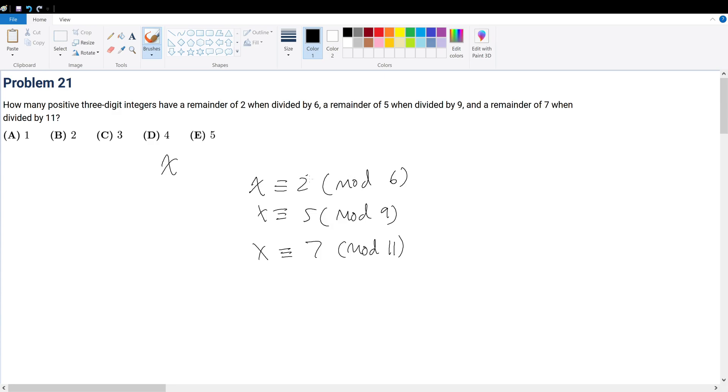Now, what is the difference between the remainder and the divisor? Well, that's 4. So that means x plus 4 must be congruent to 0 mod 6. Why is that? Think about it like this.